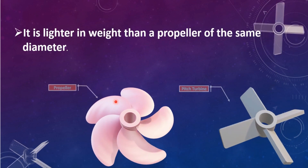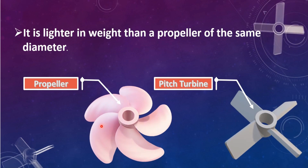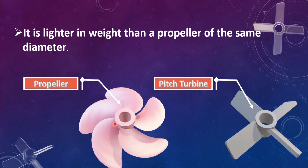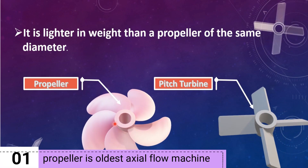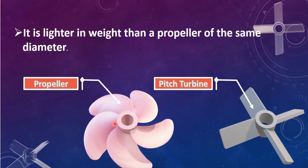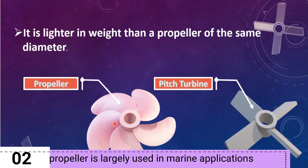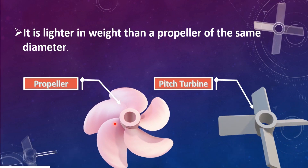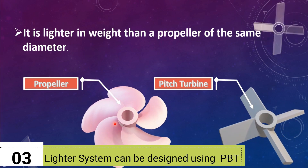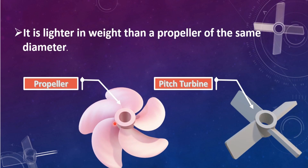It is lighter in weight than a propeller of the same diameter. Here we can see that a classical axial flow impeller is largely used in marine applications and in steel tanks for other applications. The lighter weight feature of the pitched blade turbine is advantageous in terms of a lighter gearbox, lighter diameter of shaft, and smaller size of motors and other design features.